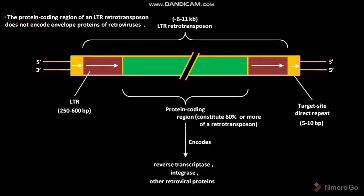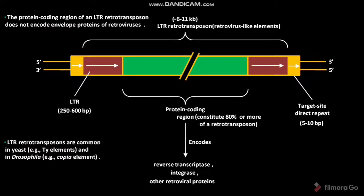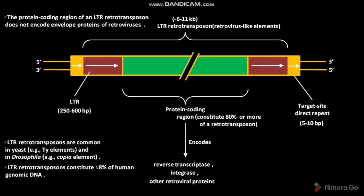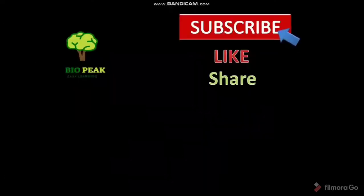LTR retrotransposons have a clear relationship with retroviruses, and so are often called retrovirus-like elements. They are common in yeast — for example, TY elements — and in Drosophila — for example, the copia element. LTR retrotransposons constitute almost equal to 8% of human genomic DNA.